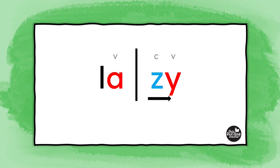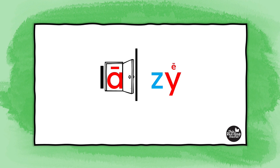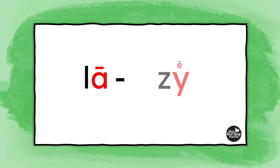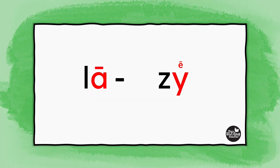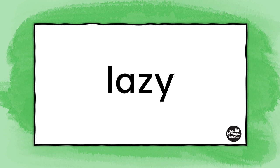Now that we have it divided, take a look at the first syllable. The A can shout its name out the door — it doesn't have a consonant blocking it. And in the second syllable, the Y gets to make its long E sound. So we've got lazy, lazy.